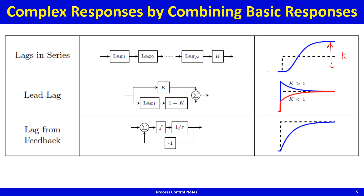You could also get a lead-lag. A lead-lag is a combination in parallel of a lag and a gain, where the lag part has a gain of 1 minus k and the other gain is k, so the net gain is 1. If k is greater than 1, you get the blue curve; if k is less than 1, you get the red curve. This is a lead-lag.